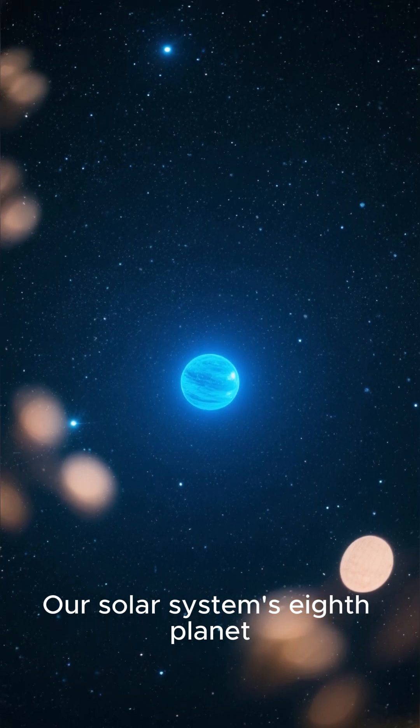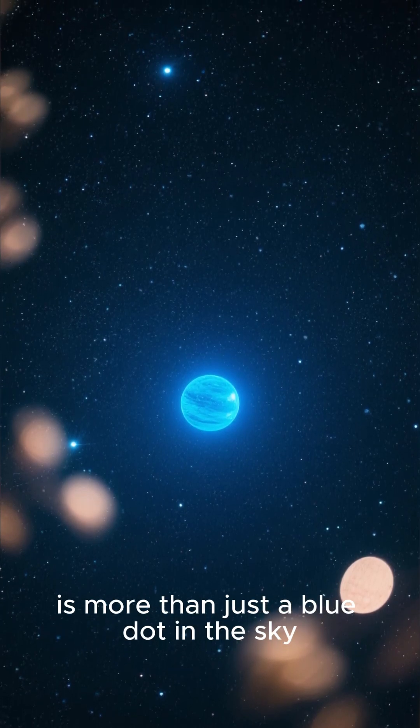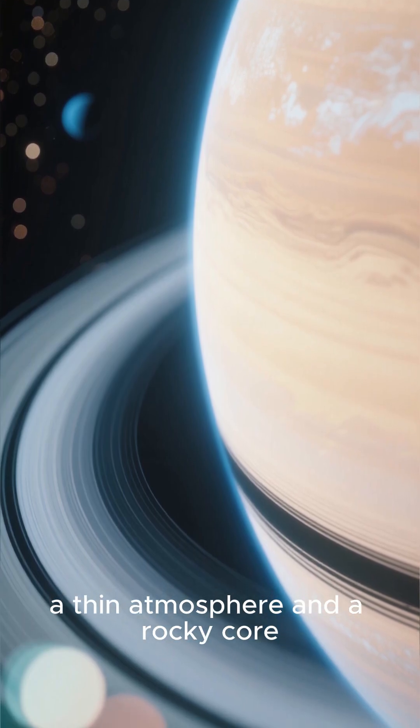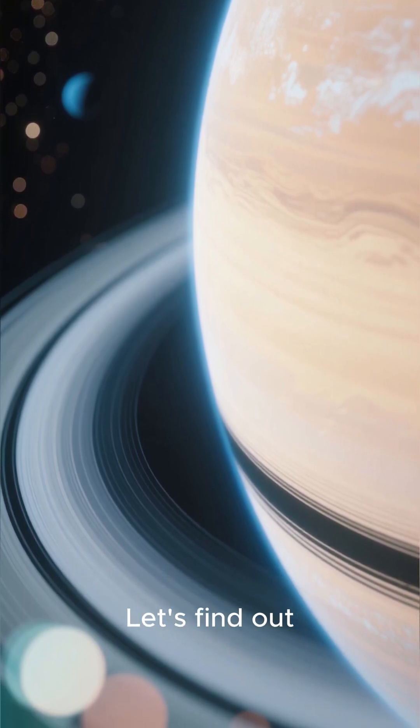Our solar system's eighth planet, Neptune, is more than just a blue dot in the sky. It has rings, a thin atmosphere, and a rocky core. But what else? Let's find out.